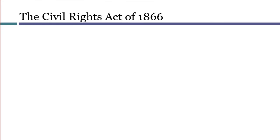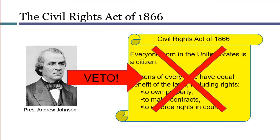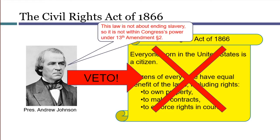One of Congress's first uses of its new 13th Amendment power was the Civil Rights Act of 1866. This law began by announcing that all persons born in the United States were citizens, targeting the first holding from Dred Scott. The law also guaranteed that certain basic rights that had previously been denied to slaves would now be available to all citizens, regardless of race. President Andrew Johnson vetoed this bill. Johnson, who was a Southern sympathizer, no doubt objected to the substance of the law, but he also considered it to be an improper intrusion by the federal government into the internal workings of the states. The constitutional theory behind the veto was that the Civil Rights Act was not truly authorized by the 13th Amendment, since the amendment involved the elimination of slavery and not regulating the rights of citizens.